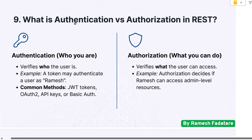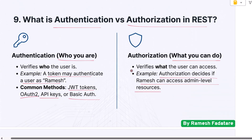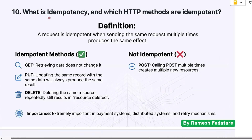Question 9: What is authentication versus authorization in REST? Authentication verifies who the user is, while authorization verifies what the user can access. For example, a token may authenticate a user as Ramesh, but authorization decides whether Ramesh can access admin-level resources. Most REST APIs use JWT tokens, OAuth, API keys, or basic auth. Understanding this difference is essential for microservices security.